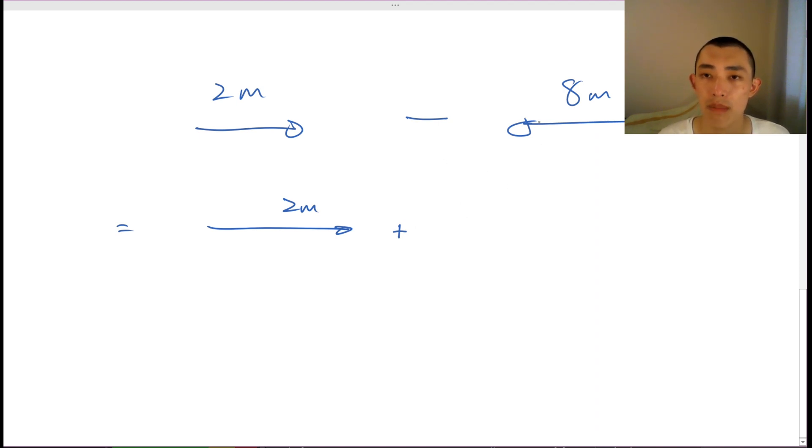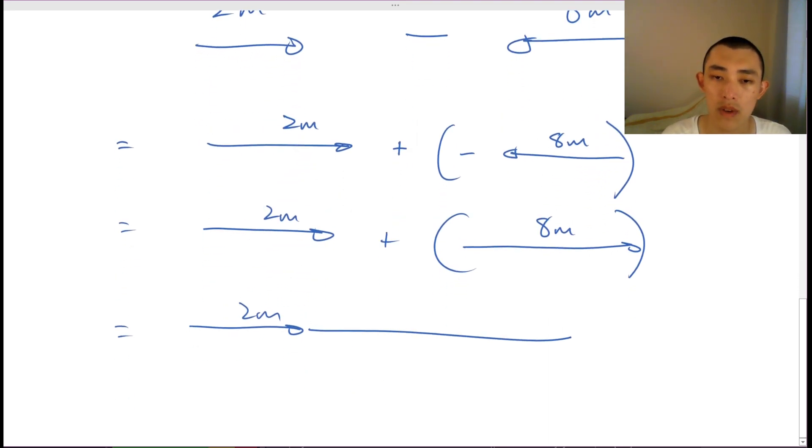This minus sign will then be absorbed into this vector. So this minus sign will be absorbed into this 8 meter vector. So to absorb it, we flip it around to be 8 meters. And so now we can see this just simplifies down to a very typical vector addition problem. We just have 2 vectors, I just get them like this. And so we can see that the answer is going to be a 10 meter vector towards the right.